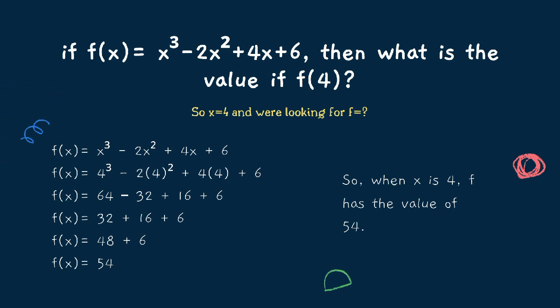In the next example, if f(x) equals x cubed minus 2x squared plus 4x plus 6, then what is the value of f(4)? In the second example, we find the numerical value of f using the same process — substituting and simplifying. We substitute x with 4: f(4) equals 4 cubed minus 2 times 4 squared plus 4 times 4 plus 6. 4 cubed is 64; negative 2 multiplied by 4 squared is negative 32, plus 16, plus 6. 64 minus 32 is 32, plus 16 is 48, plus 6 is 54. The numerical value at f(4) is 54.